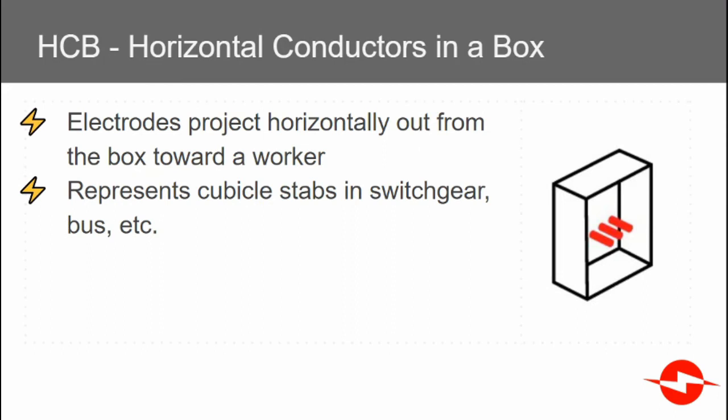The final box configuration is horizontal conductors in a box. Electrodes project horizontally out from the box toward a worker. This could represent cubicle stabs, for example.